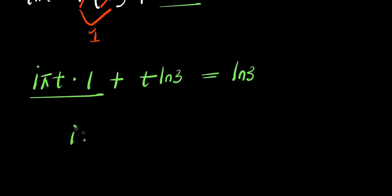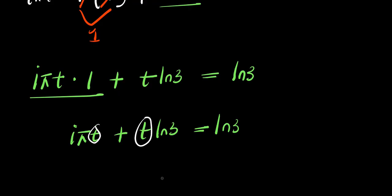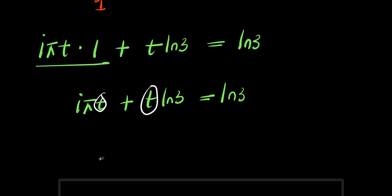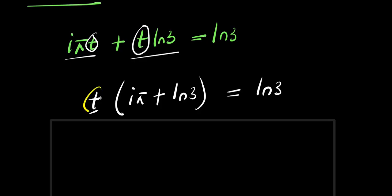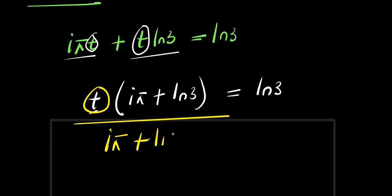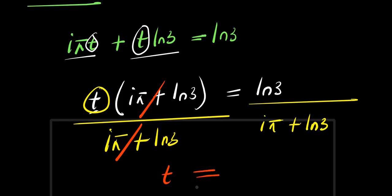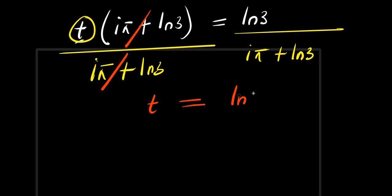So multiplying through, we have i·π·t + t·ln 3 = ln 3. We can now factor out t: t times (i·π + ln 3) equals ln 3. To isolate t, we divide both sides by (i·π + ln 3), and we get t equals ln 3 divided by (i·π + ln 3).